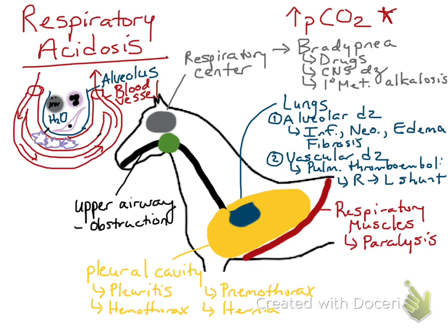Those are the main causes of respiratory acidosis: upper airway obstruction, cardiopulmonary disease, pleural disease, depression of the respiratory center, and respiratory muscle paralysis.